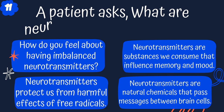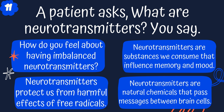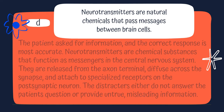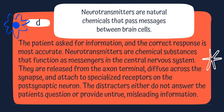Question 11. A patient asks, what are neurotransmitters? Will you say: A. How do you feel about having imbalanced neurotransmitters? B. Neurotransmitters protect us from harmful effects of free radicals. C. Neurotransmitters are substances we consume that influence memory and mood. Or D. Neurotransmitters are natural chemicals that pass messages between brain cells? The answer is D. Neurotransmitters are chemical substances found as messengers in the CNS. They are released from the axon terminal, diffuse across the synapse, and attach to specialized receptors on the postsynaptic neuron. The distractors either do not answer the patient's question or provide untrue, misleading information.